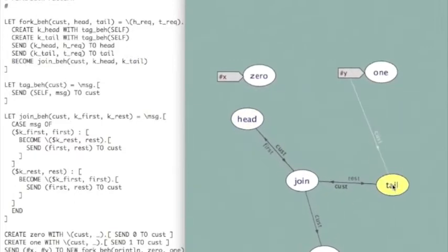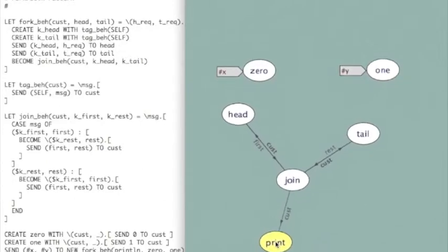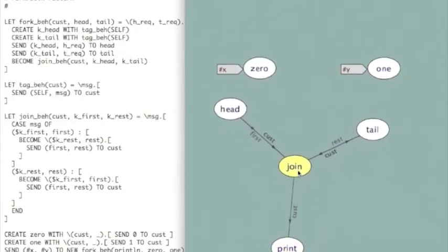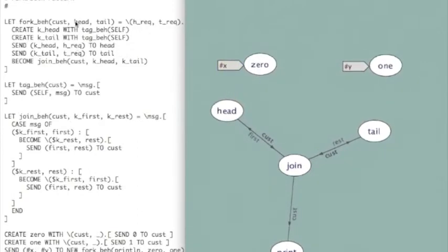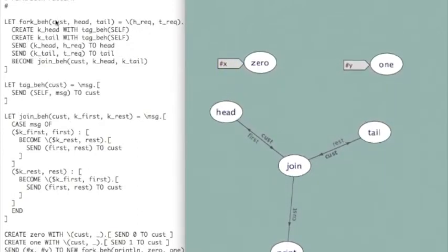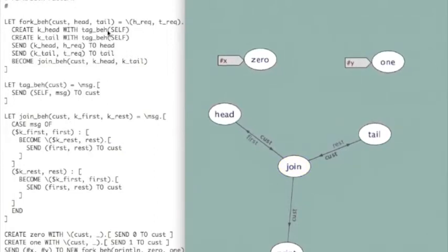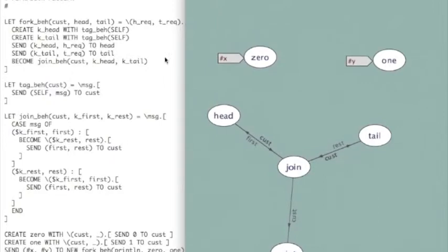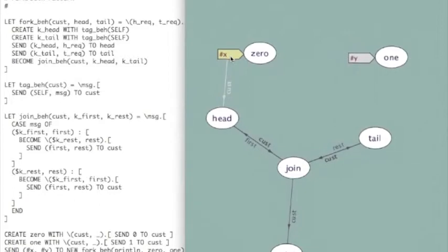And then I'm going to construct these actors that are waiting to join the result. So in one of these messages, you'll see that there was a customer originally initialized here that the join remembers. I'm sending the two requests. And then when I send the request on to the actual service, instead of supplying the original customer, I supply a reference to this actor that I've created, one each for head and tail.